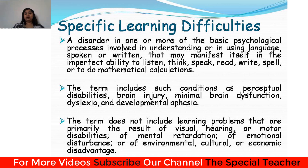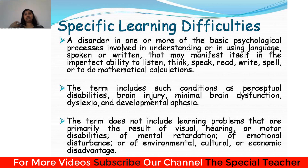Dysgraphia affects a person's fine motor skills. It results in illegible handwriting and inconsistent spacing — there will be no proper space between letters, and lines may overlap on the page. Writing becomes very difficult for the child. A child with dysgraphia also cannot think and write simultaneously, so copying from the board is extremely difficult as they must understand the lecture and write it at the same time.